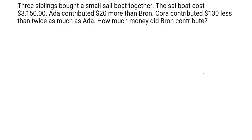Hi everyone, welcome back to Singapore Math. Today we are going to see one of the problems sent to us by one of the viewers. Three siblings bought a small sailboat together. The sailboat costs three thousand one hundred and fifty dollars in total. Ada contributed twenty dollars more than Brawn. Cora contributed one hundred and thirty dollars less than twice as much as Ada. How much money did Brawn contribute?